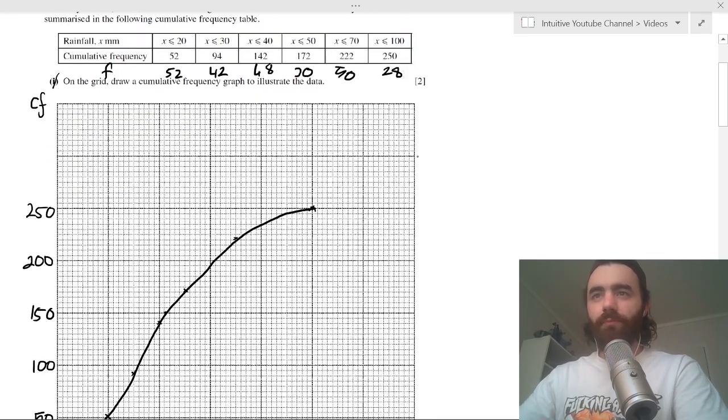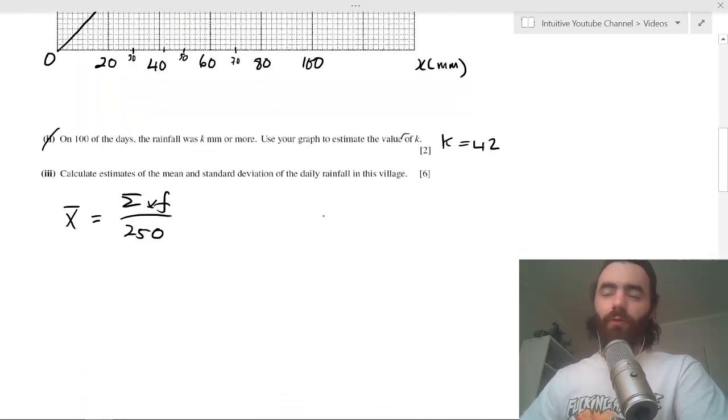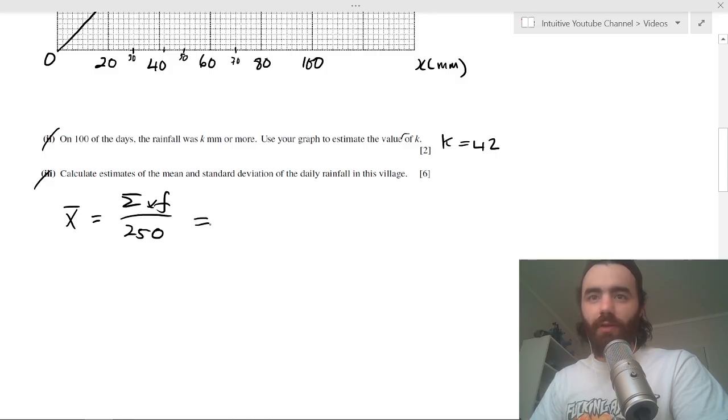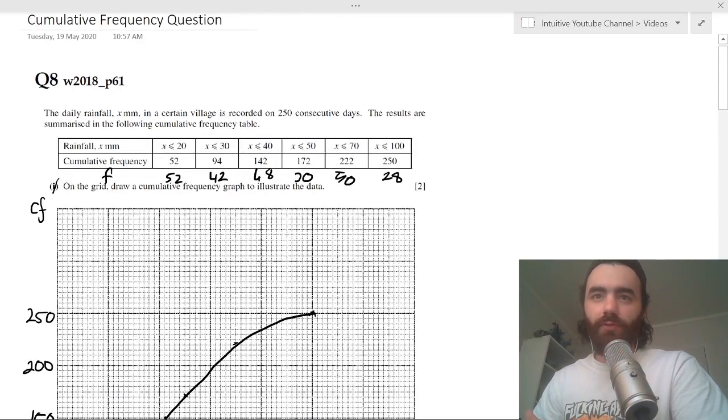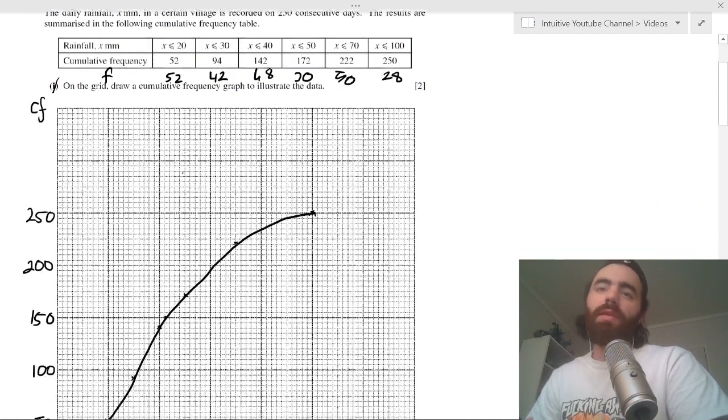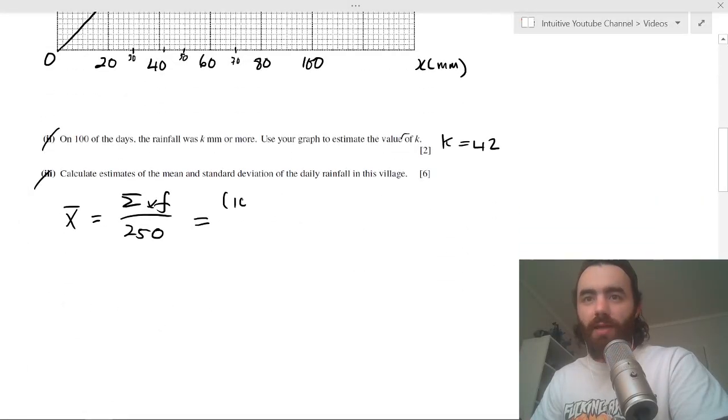Okay. So then just like we did for the previous video on histograms, let's calculate this. Well, the x values are going to be the middle of these intervals. So between 0 and 20, the interval we have a frequency of 52, but the middle will be 10.